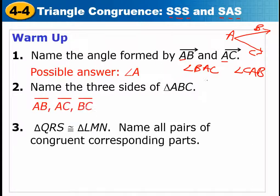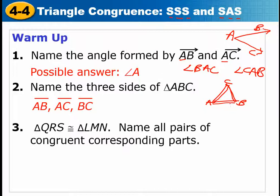The next one says name the three sides of triangle ABC. That's much easier to do if you have a picture, so draw a triangle, name it ABC, and then you can see that the segments would be segment AB, segment AC, and segment BC.